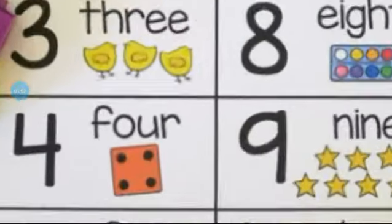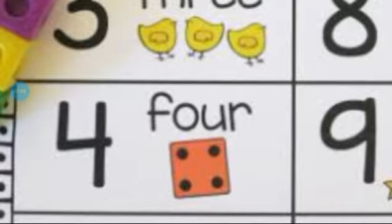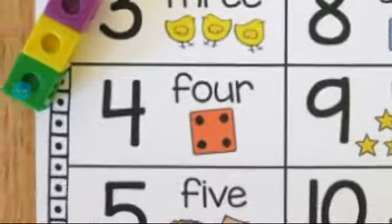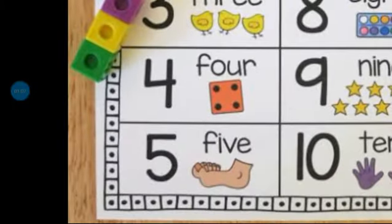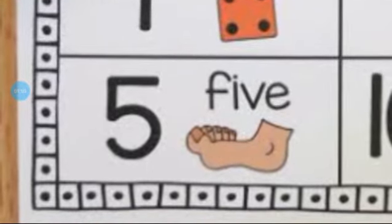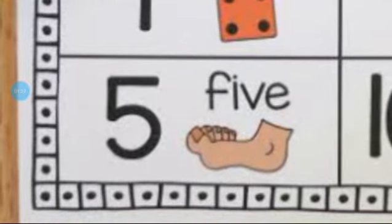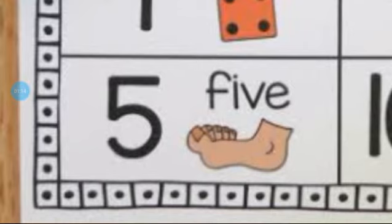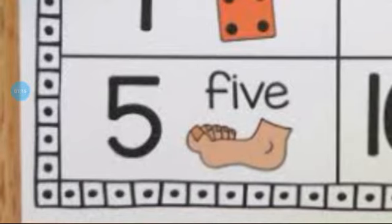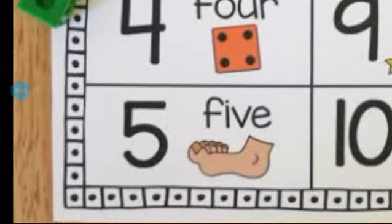This is number 4. And which number is this? This is number 5. And how many toes are here? 1, 2, 3, 4 and 5.